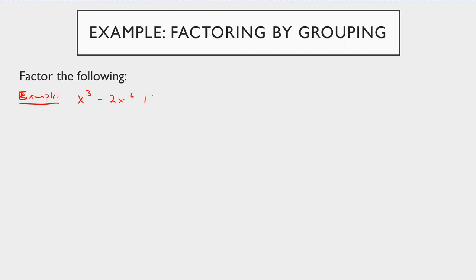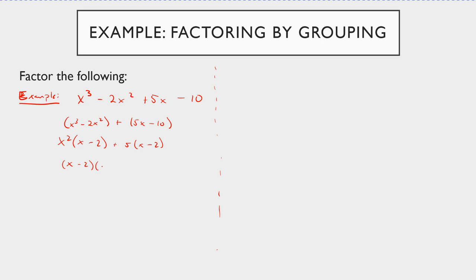Let's look at x cubed minus 2x squared plus 5x minus 10. There's no greatest common factor among the four terms, so I'll group the first two and the second two. The GCF of x cubed and 2x squared is x squared, giving x squared times the quantity x minus 2. For 5x minus 10 the GCF is 5, giving 5 times the quantity x minus 2. They both have x minus 2, so I factor that out and I'm left with x minus 2 times the quantity x squared plus 5.